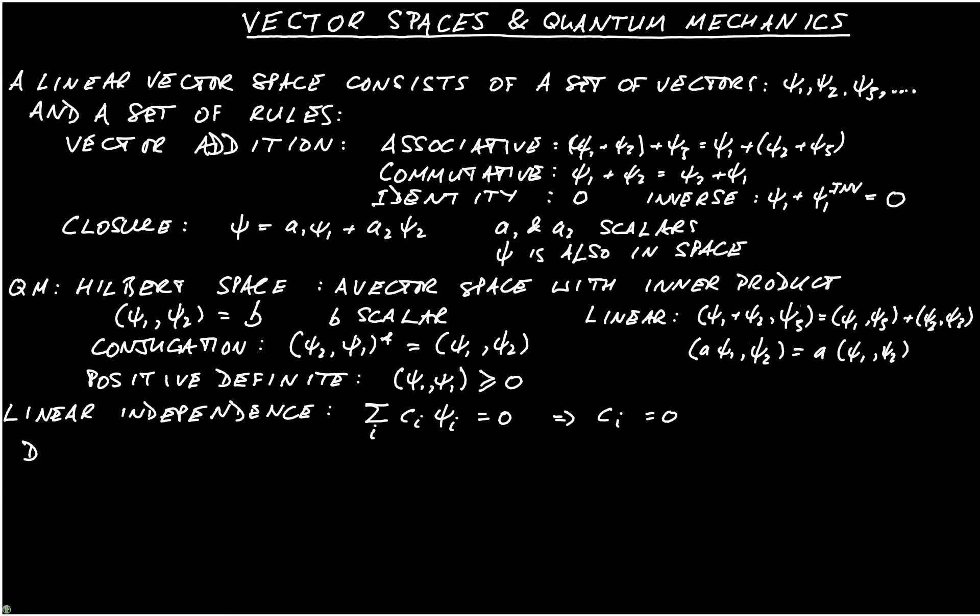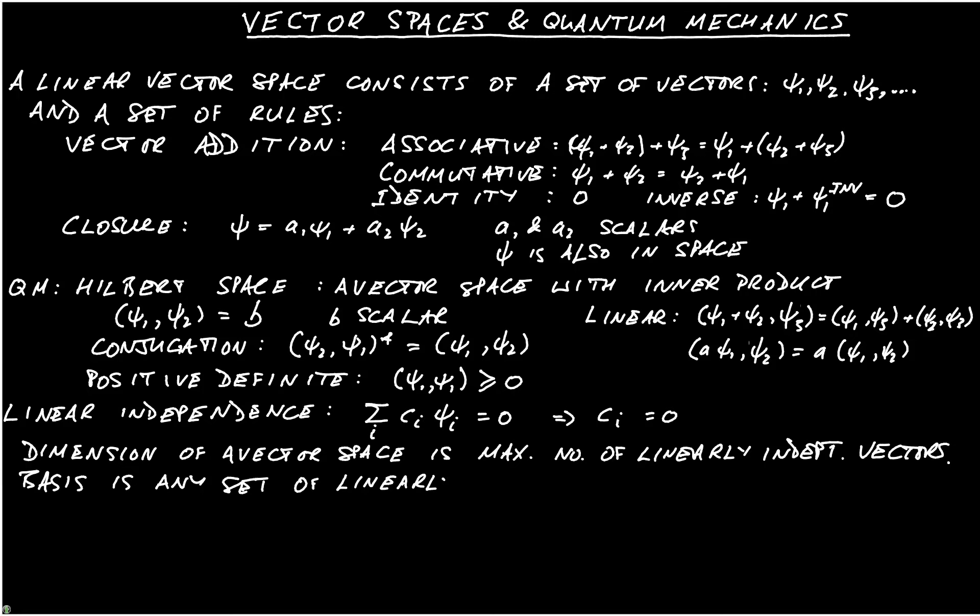The dimension of a vector space is simply the maximum number of linearly independent vectors you can have in that space. And the basis of a vector space is any complete set of linearly independent vectors.